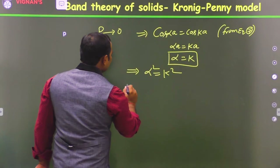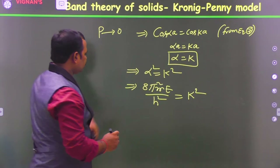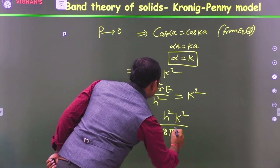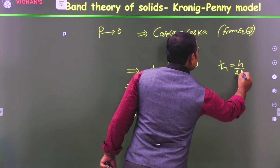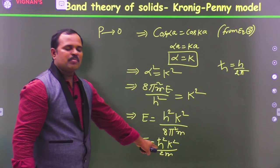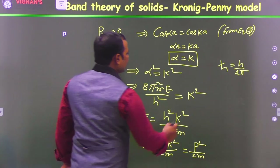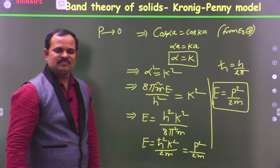We know that α² = 8π²mE/h² = k². So we get the energy expression E = h²k²/(8π²m). Rearranging in terms of ħ = h/2π gives E = ħ²k²/(2m). Since ħk is called momentum p, we can write E = p²/(2m). This is the kinetic energy of a free particle.